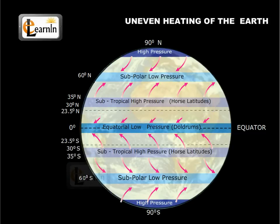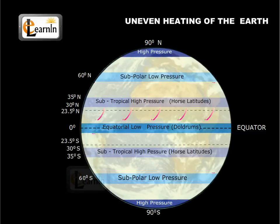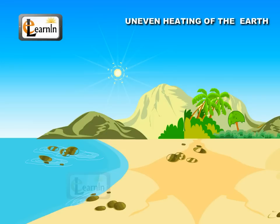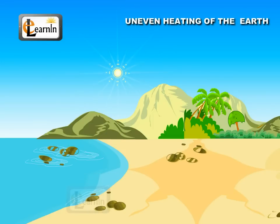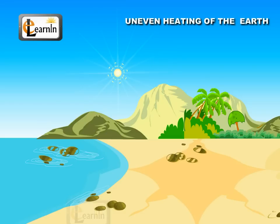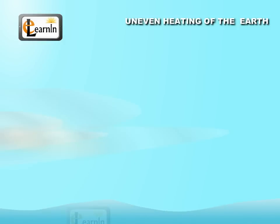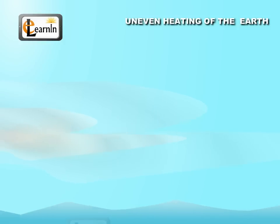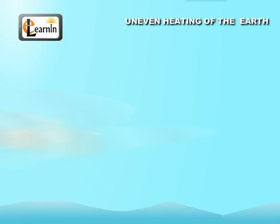Rotation of the Earth may cause a change in the direction of winds. During summer, land near the equator warms up faster and the temperature of the land is higher most of the time than the oceans. The air over the land gets heated and rises. This causes the wind to flow from the oceans to the land.